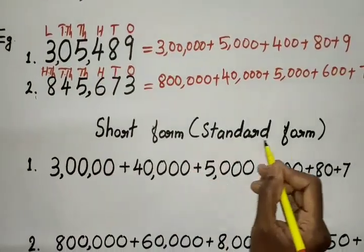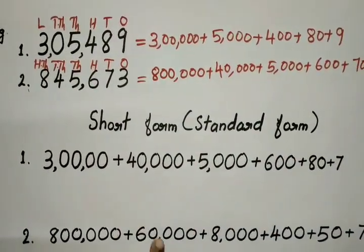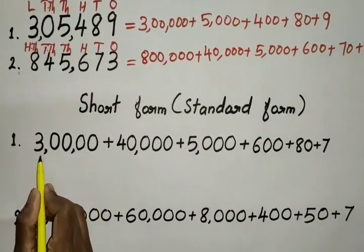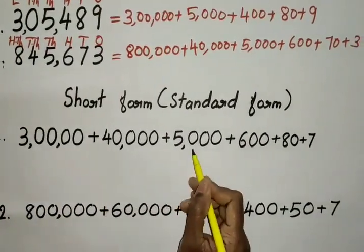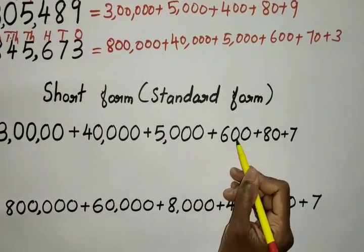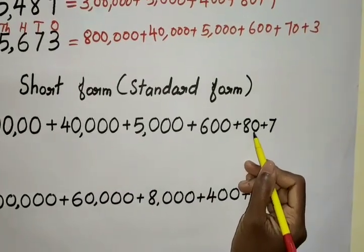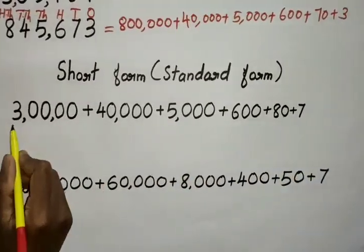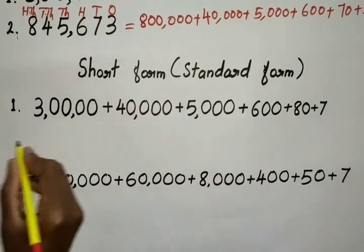Short form or standard form — it is very easy. 3,00,000 plus 40,000 plus 5,000 plus 600 plus 80 plus 7. You know this is the Indian numbering system.